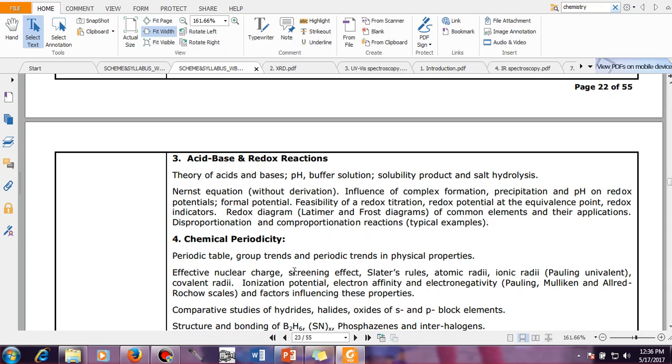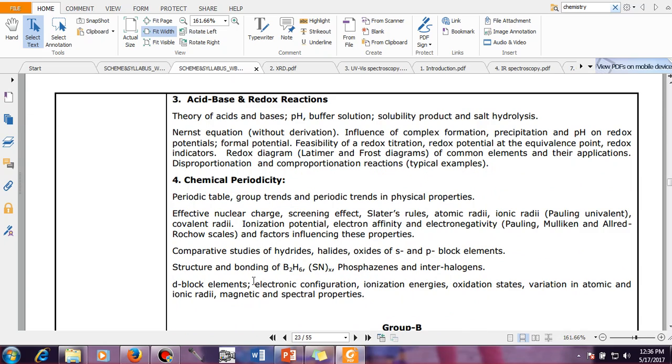If you go to the playlist Chemistry, you will get a chapter Chemical Periodicity, and in Chemical Periodicity you have Chemical Periodicity 1, Chemical Periodicity 2, and 3. In one I only tell about periodic table, group trends and periodic trends in physical properties, effective nuclear charge, and all other things like shielding effects, Slater's rule, atomic radii, ionic radii.